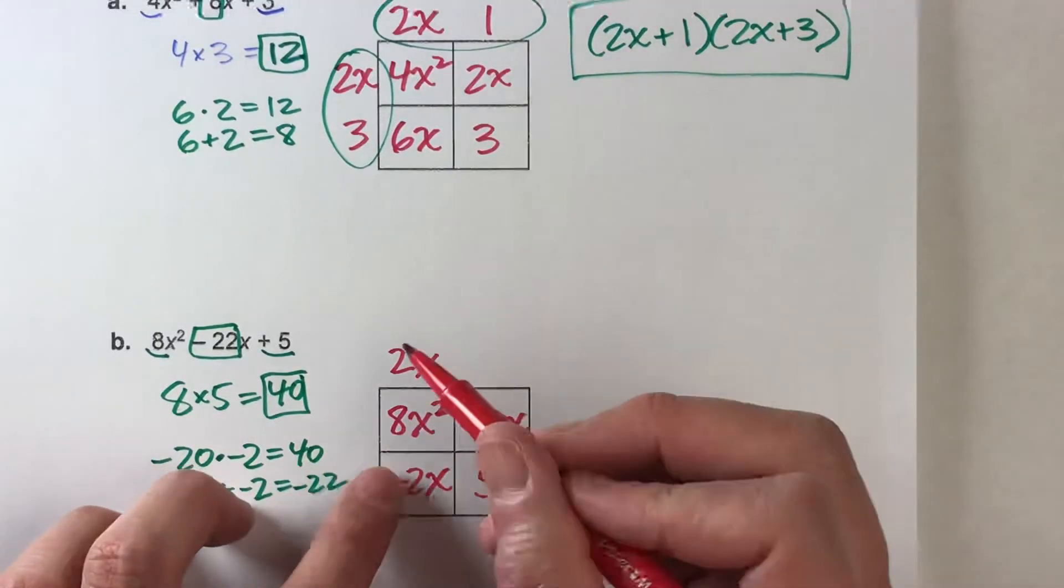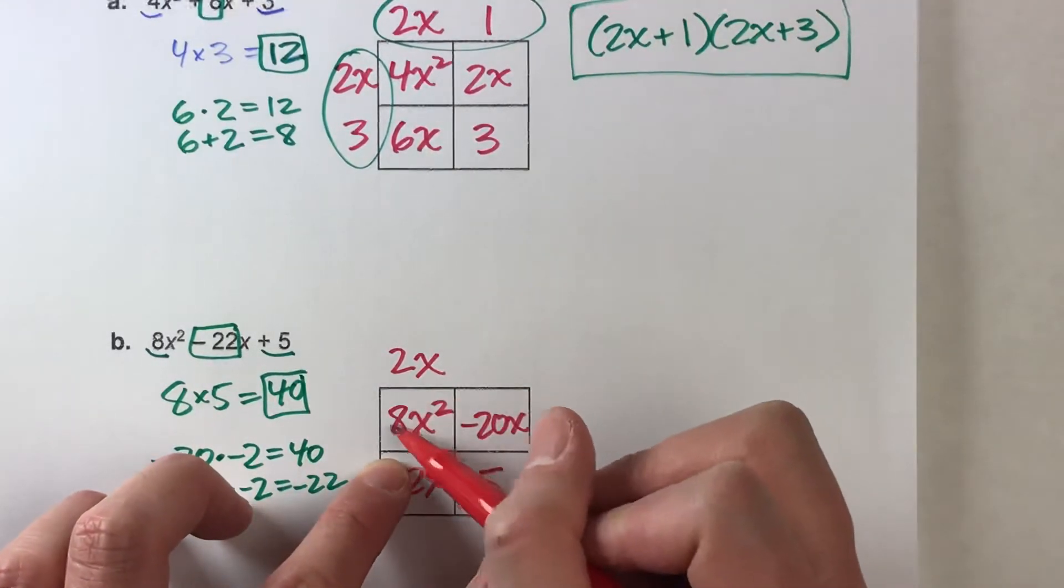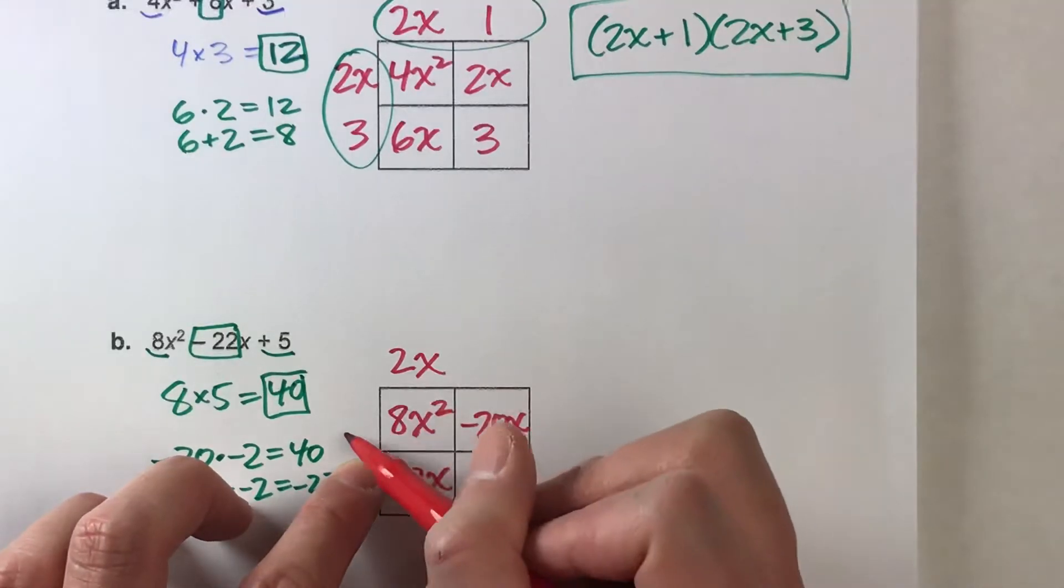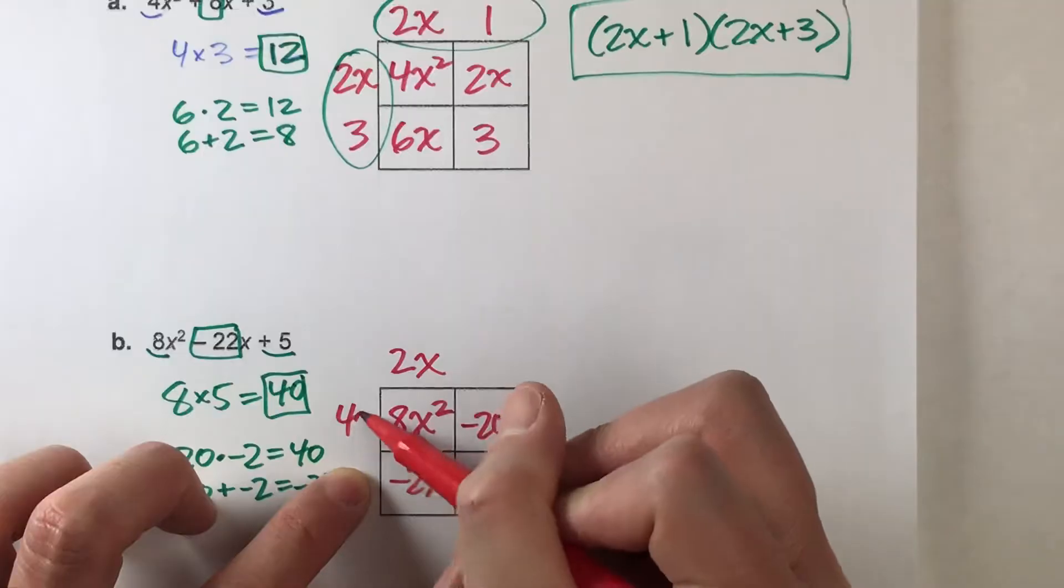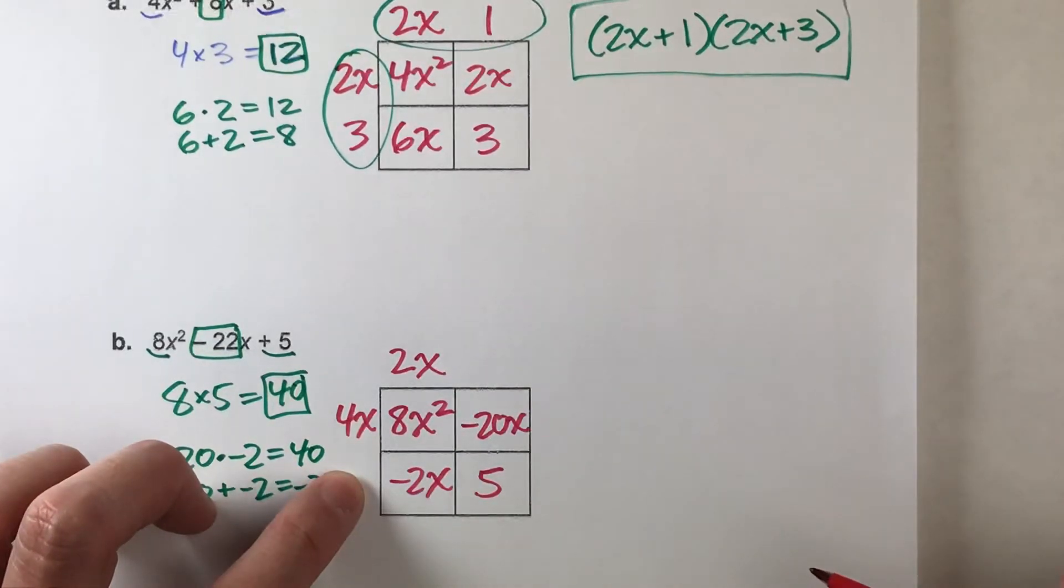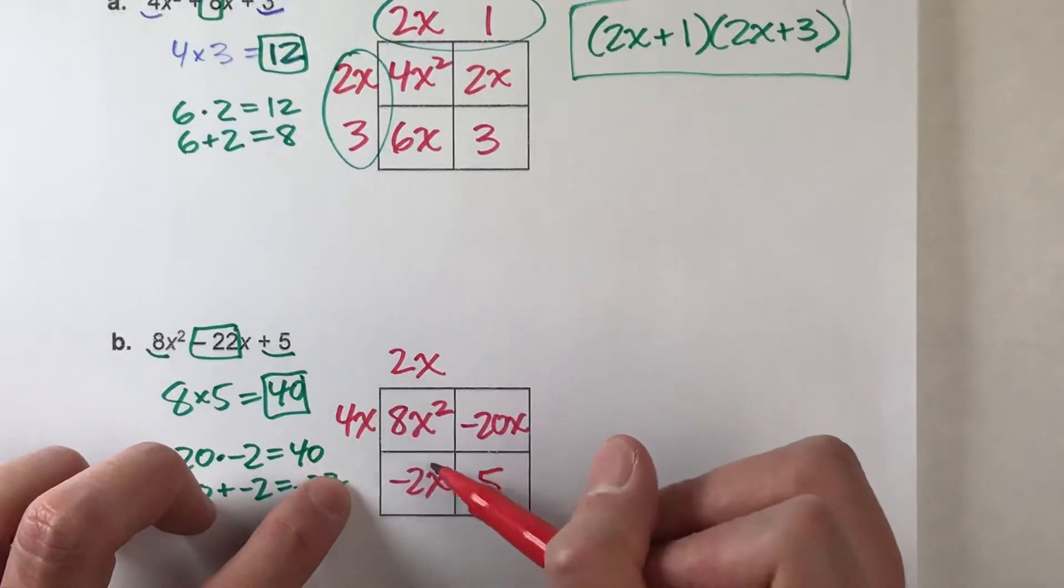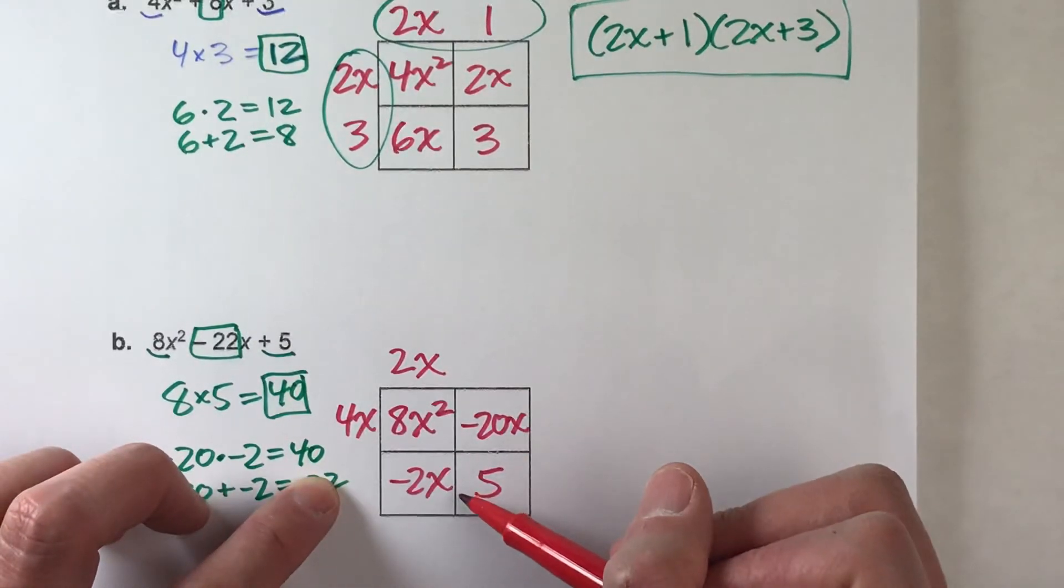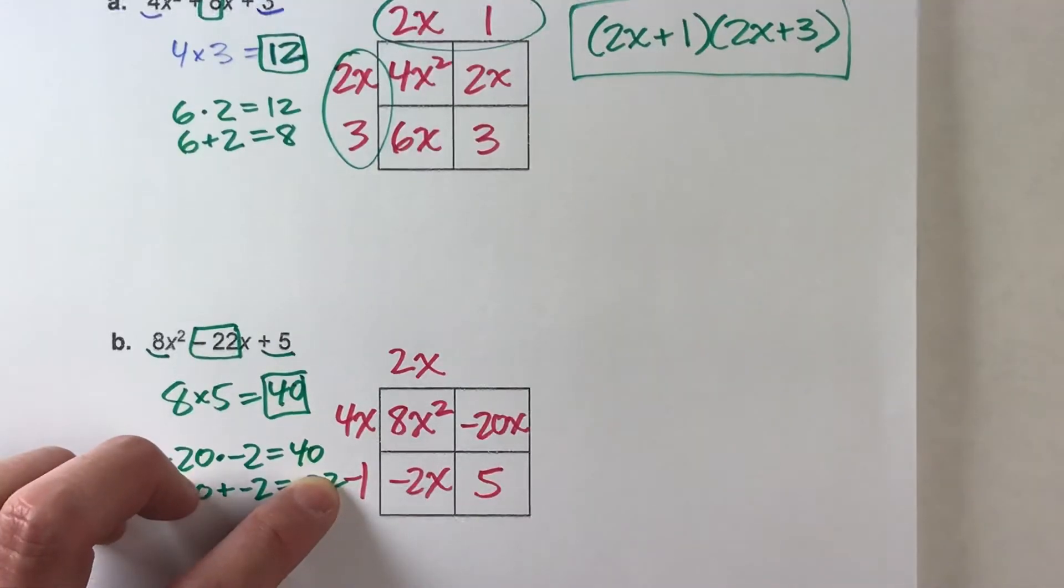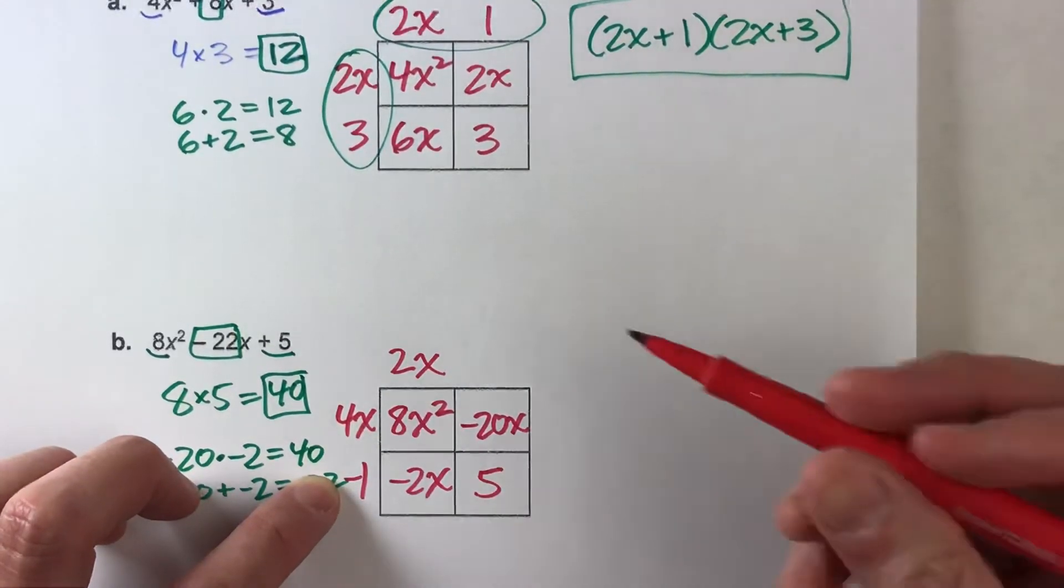Now, let's figure out what the other side is, because if this box has an area of 8x squared, 2x times what gets me 8x squared? Well, 2x times 4x gets me 8x squared. Similarly, down here, 2x times what gets you negative 2x? 2x times negative 1 gets me negative 2x.